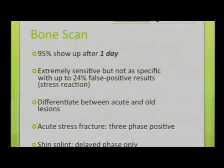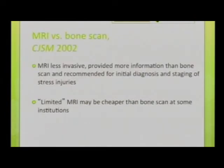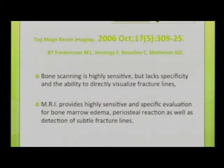Comparing MRI and bone scan: at the institution level, MRI is often less expensive, easier to access, and provides more information. It is recommended for initial diagnosis and staging of stress injuries. Bone scanning is highly sensitive but lacks specificity and the ability to directly visualize fracture lines. MRI provides highly sensitive and specific evaluation of bone marrow edema, periosteal reaction, and detection of subtle fracture lines.